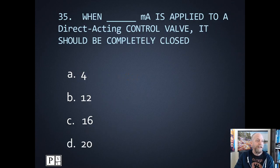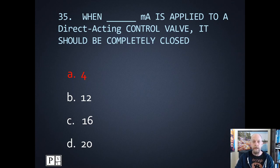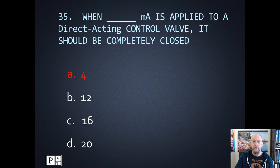Number thirty-five: when how many milliamps is applied to the direct acting control valve should it be completely closed? This corresponds to the current to pressure transducer. 4 milliamps is the value that corresponds to 3 psi — the lowest pressure. Lowest current, lowest pressure, the valve is most likely closed. If we had 20 milliamps, then we'd have 15 psi applied to the valve and it would be open. Being a direct acting control valve.